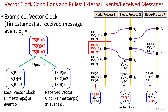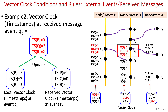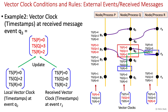Next, event P4 on node P is a local event, so only the local timestamp is incremented in the vector. Similarly, Q3 is a received message event on node Q. For updating the vector clock at Q3, we need to increment the value of the local timestamp of Q by 1 in the vector. Then compare the timestamps of P in the local vector and received vector and update it by the maximum value. Similarly, compare the timestamps of R in the local vector and received vector and update it by the maximum value. Next, event Q4 on node Q is a local event and only the local timestamp is incremented in the vector.